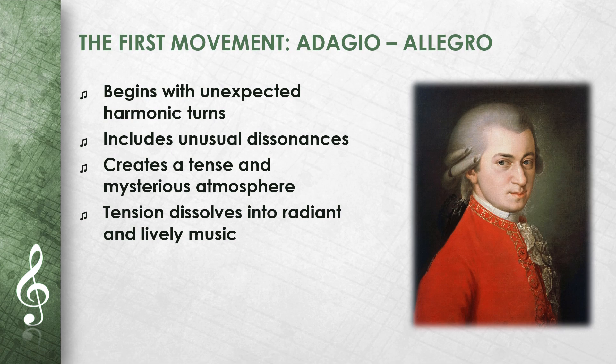The first movement begins with an Adagio that is known for its unexpected harmonic turns and the inclusion of dissonances that were considered extremely unusual at the time. This introduction creates a tense and mysterious atmosphere before moving into the Allegro, where the tension dissolves into radiant and lively music that combines classical style with an extraordinary depth of expression.